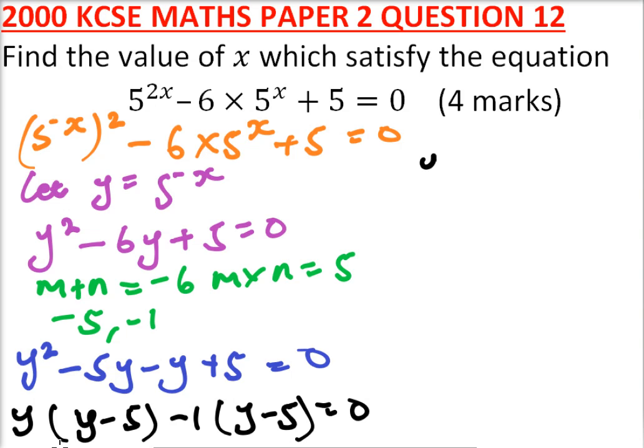This means that we have y, factor out y, you get y minus 1 is equals to 0, implying y is equals to 5 or 1.